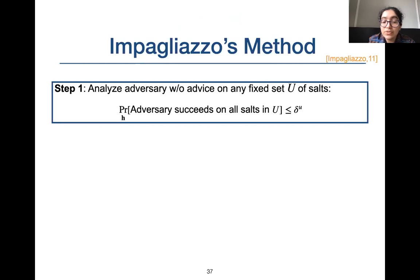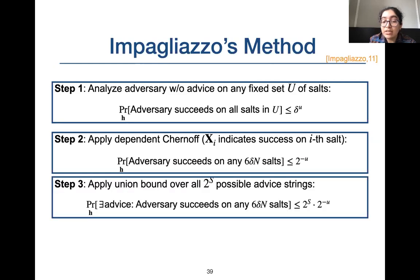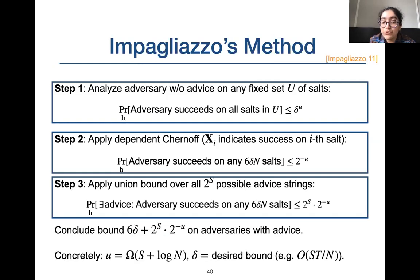Next, we describe Impagliazzo's technique to handle dependence of collisions for salts on pre-computed advice. Step one: analyze the adversary without advice on a fixed set U of salts and bound its advantage to δ^u. Step two: apply the dependent concentration result and bound the probability of winning on at least 6δn salts to exponentially small in u. Since it's exponentially small in u, we take a union bound over 2^s advices. This gives a bound of 6δ + 2^s × 2^{-u} on adversaries with advice. When u ≥ s + log n, we obtain a bound of order δ.